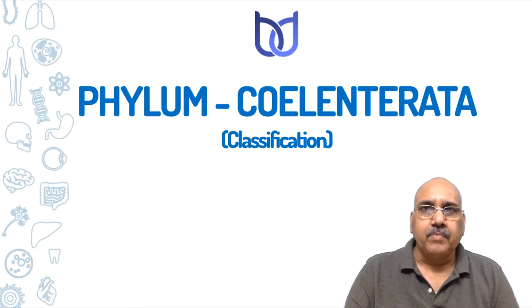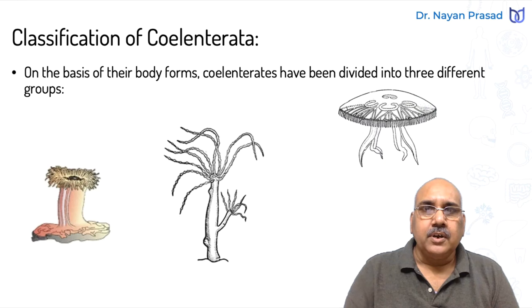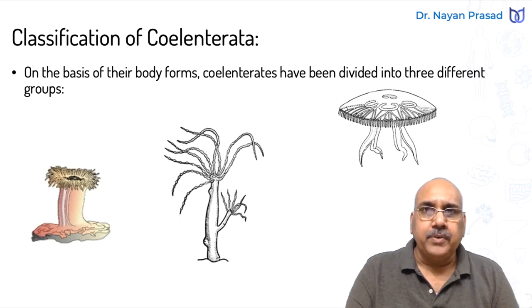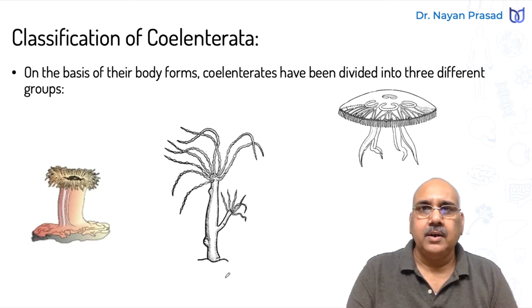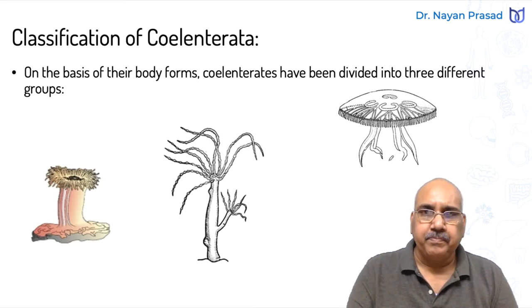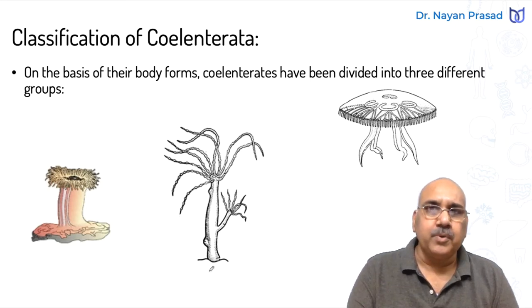Phylum Cylentata includes different members. These are the simplest metazoans having division of labor. In them, polymorphism is found, meaning they are found in two different forms: one called polyp, another medusa. Remember, Phylum Cylentata includes hydra and jellyfish-like individuals. They have tentacles in their body, some with umbrella-shaped body, some with tubular body, some appear like flowers.